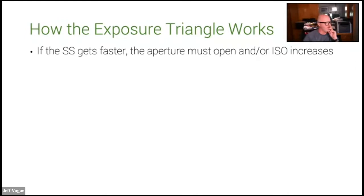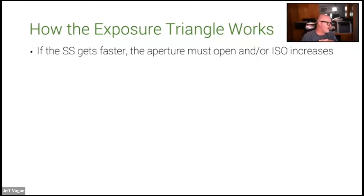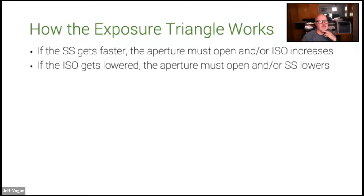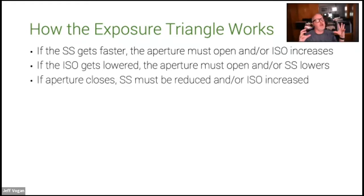How the exposure triangle works: if the shutter speed gets faster, the aperture must open, because with less time the shutter is open, not as much light is coming in. You've got to make the hole bigger or increase the ISO sensitivity. Think of it as: you have to adjust one or two settings if you're changing a third. If the ISO gets lower, either the aperture must open or the shutter speed lowers. If the aperture closes, the shutter speed must be reduced or the ISO must be increased to allow the sensor to capture more light.